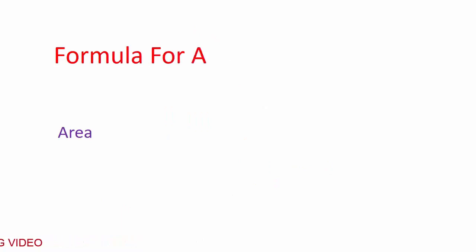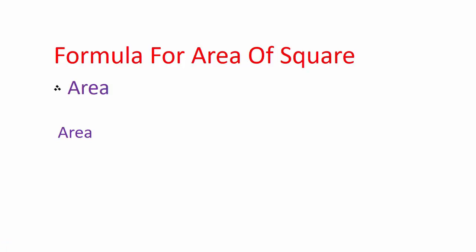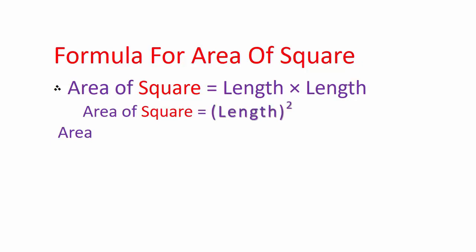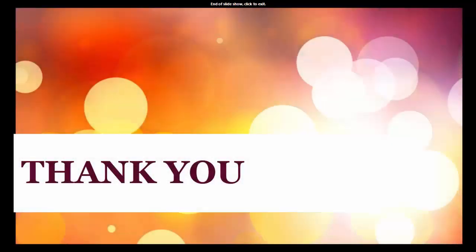Formula for area of a square: Area of square is equal to length multiplied by length, that is, area of square is equal to length squared. This is the formula for area of a square. Thank you for watching this video.